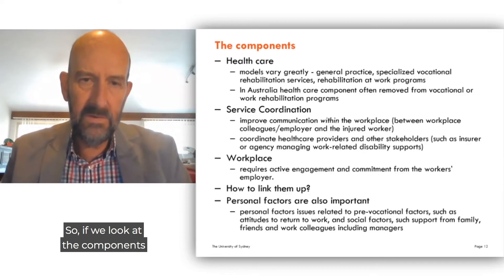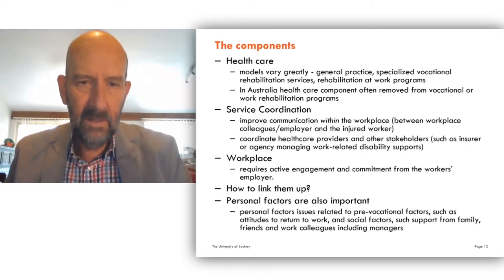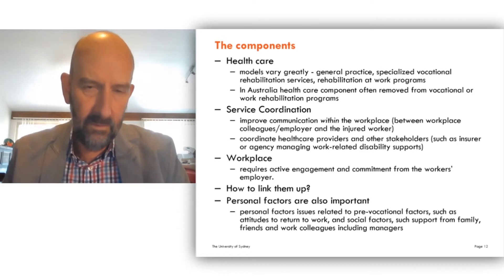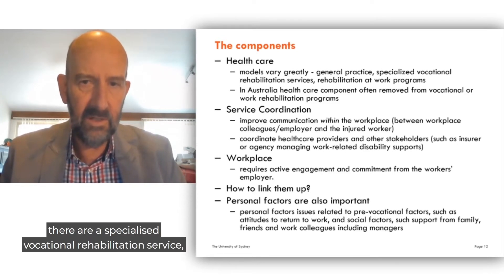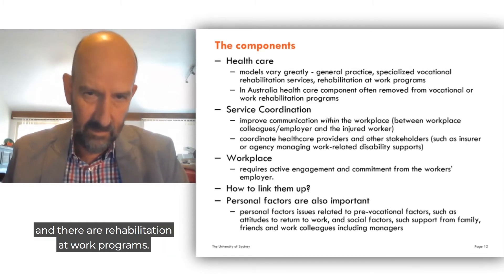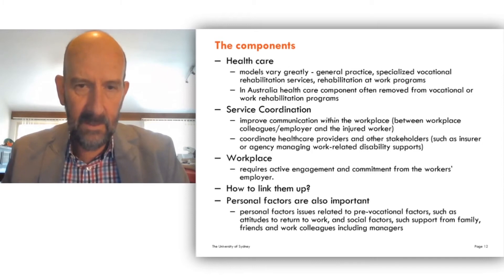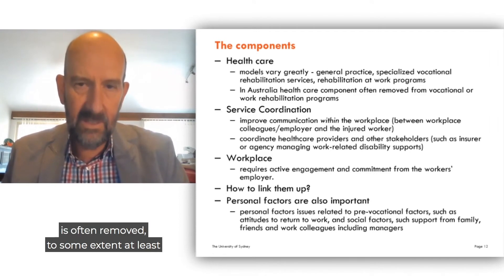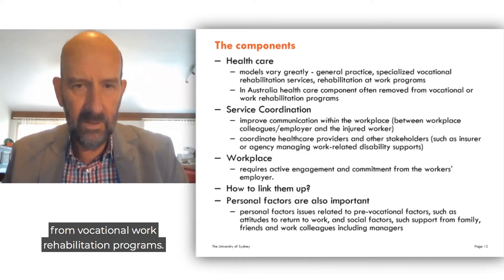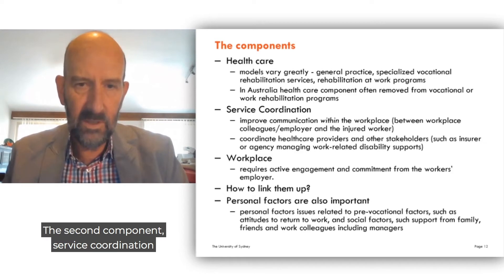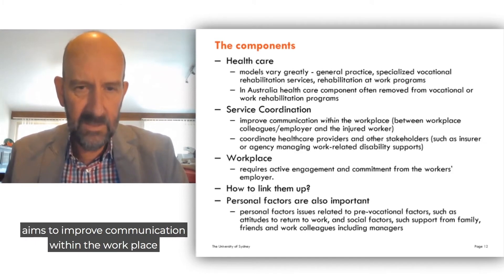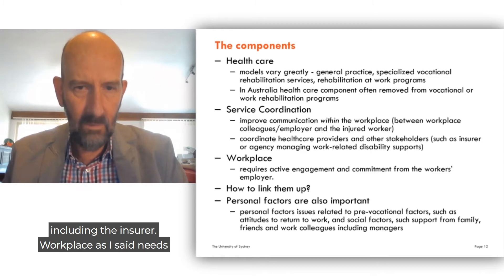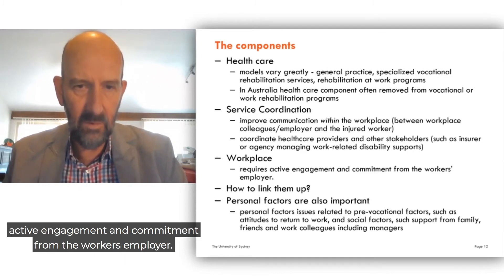Looking at the components of the vocational rehabilitation program: first, the healthcare component — there are lots of different models, through the person's general practitioner, specialised vocational rehabilitation services, and rehabilitation at work programs. In Australia, the healthcare component is often removed to some extent from vocational rehabilitation programs. The second component, service coordination, aims to improve communication within the workplace and coordinate healthcare providers and other stakeholders, including the insurer. The workplace needs active engagement and commitment from the worker's employer.